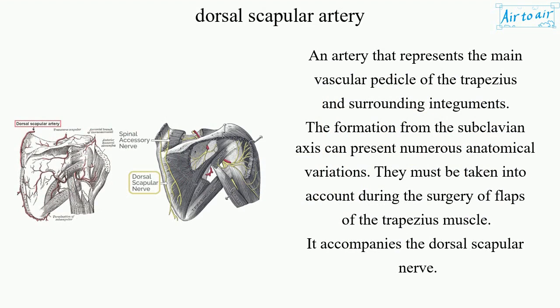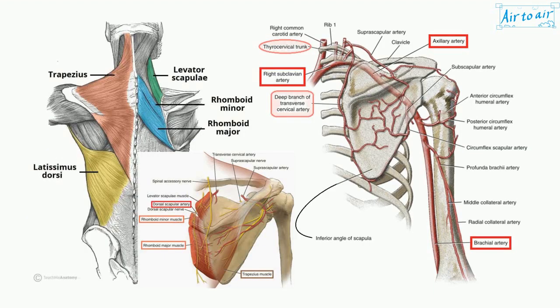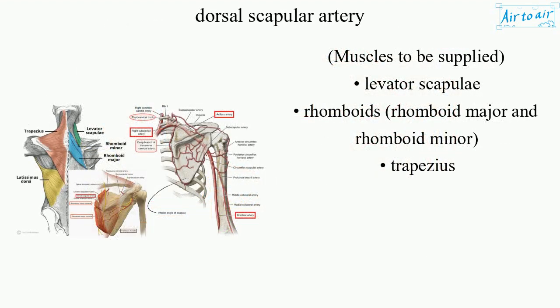These variations must be taken into account during the surgery of flaps of the trapezius muscle. It accompanies the dorsal scapular nerve. Muscles to be supplied include the levator scapulae, rhomboid major, rhomboid minor, and trapezius.